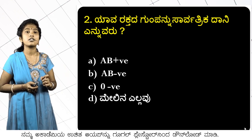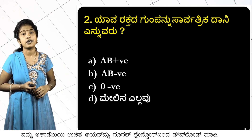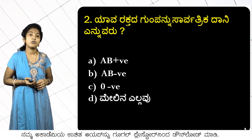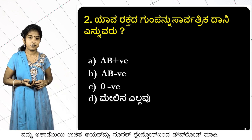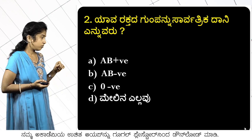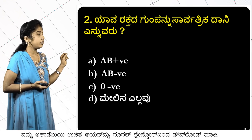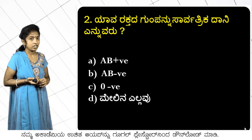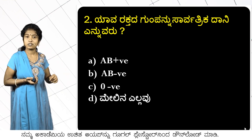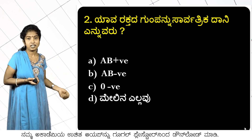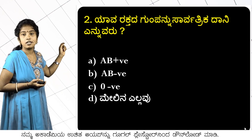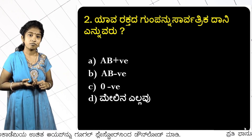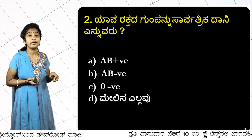Next question: which is the universal donor blood group? The options are AB positive, AB negative, and O negative. AB positive is the universal recipient — this is the person who can receive any blood group.